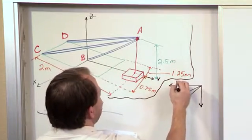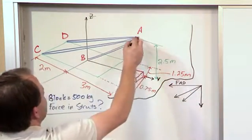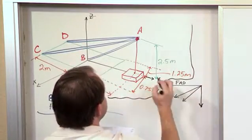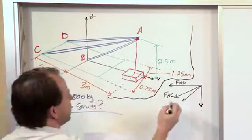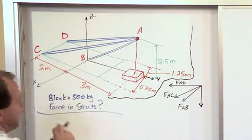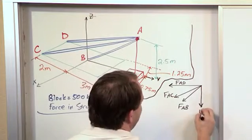This guy we're going to call FAD, that's the force along member AD. This guy we're going to call FAC, the force along member AC, and this one we're going to call, you guessed it, FAB because it points from A to B. This guy we're just going to call the weight.